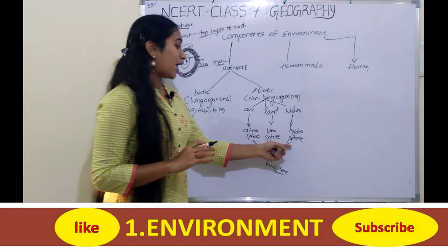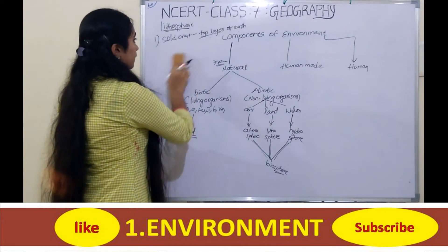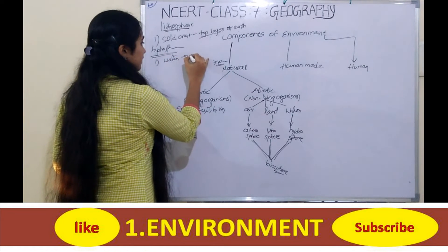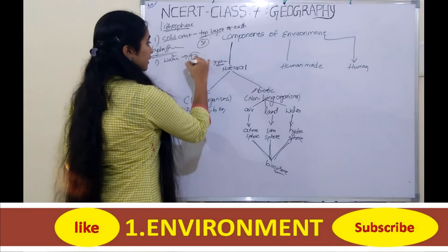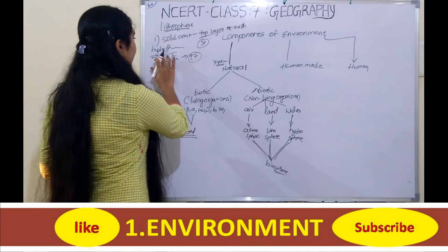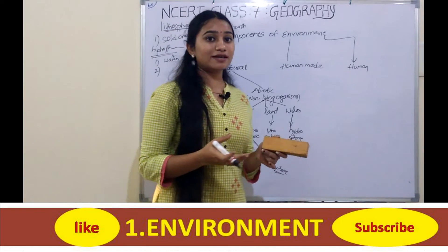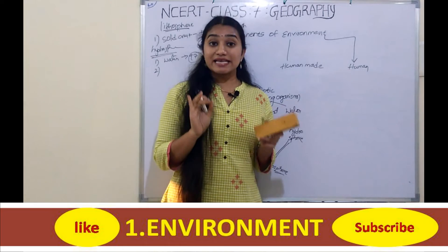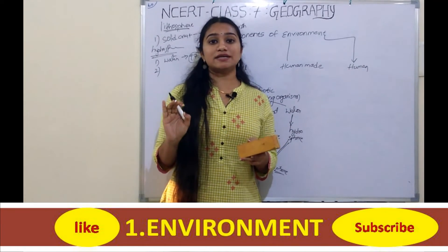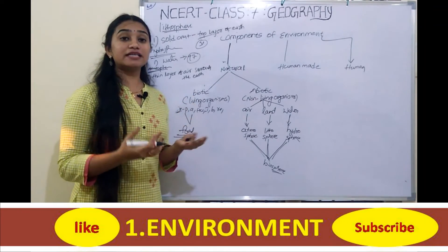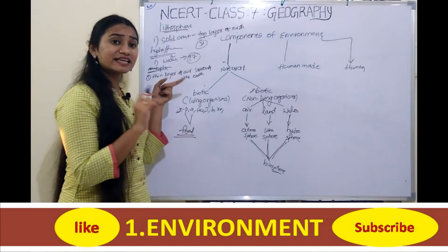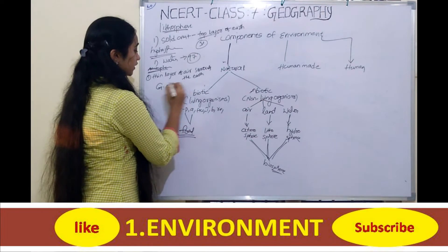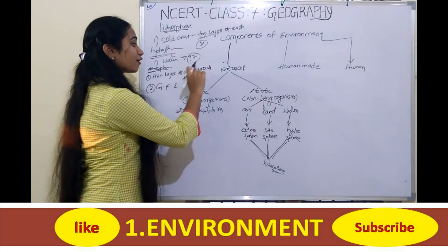Now moving on to the hydrosphere. Hydrosphere is nothing but water. Water is 97% and land is 3%. Hydrosphere consists of water in any format — ponds, rivers, lakes, and oceans. Water is essential for each and every living organism. Next, atmosphere is nothing but a thin layer of air that surrounds the earth. It surrounds the earth because of the gravitational force of the earth — due to gravitational force, the thin layer of air surrounds the earth.